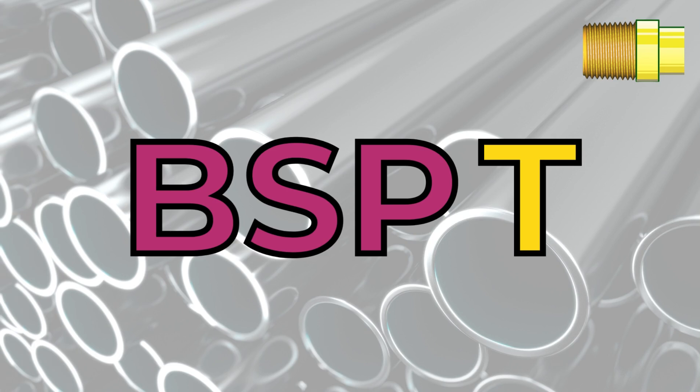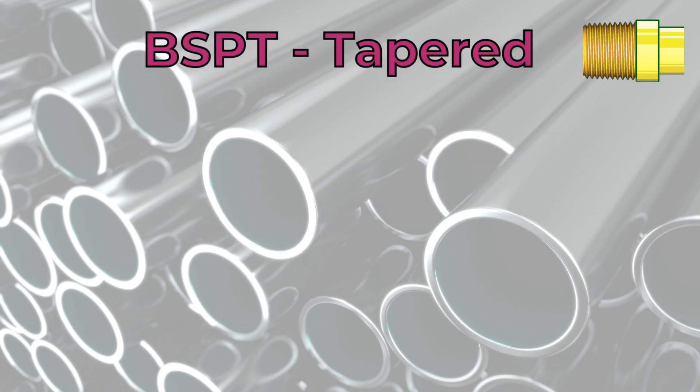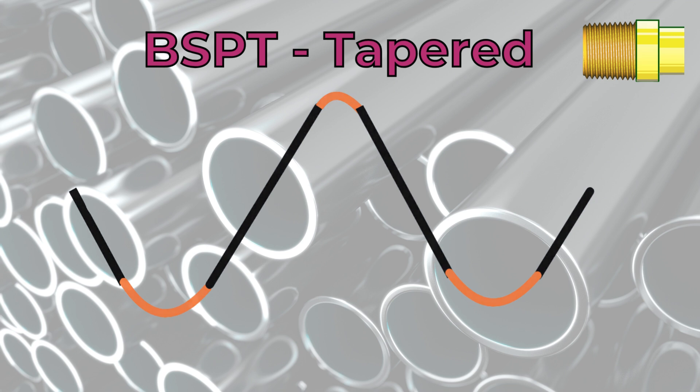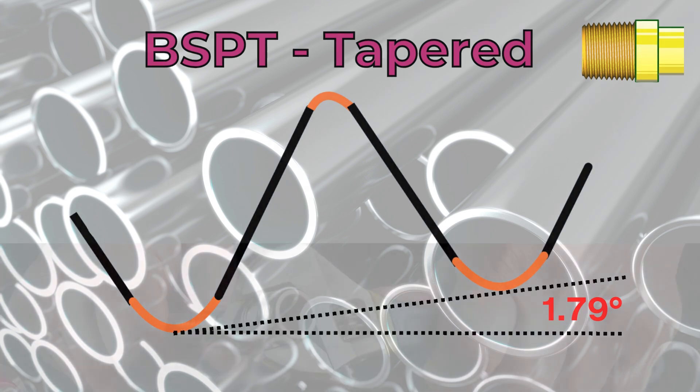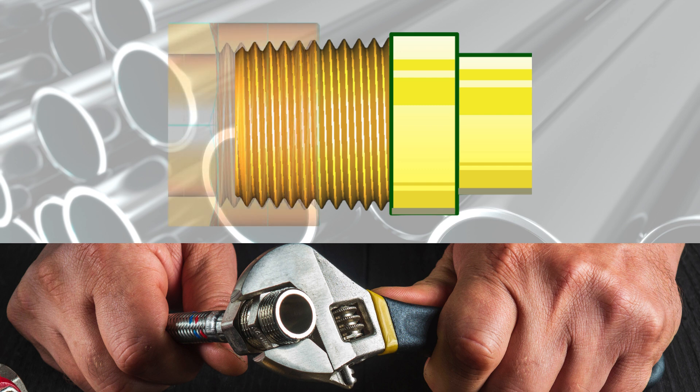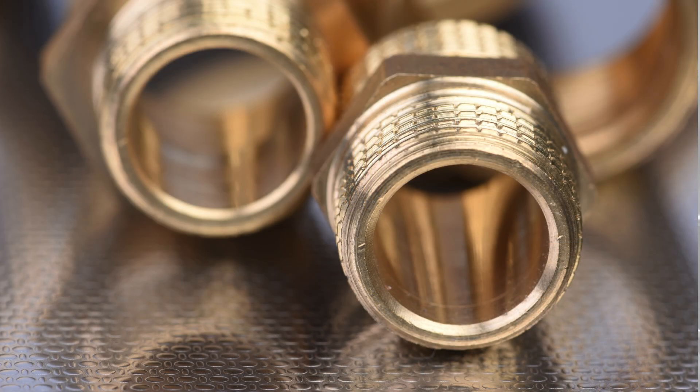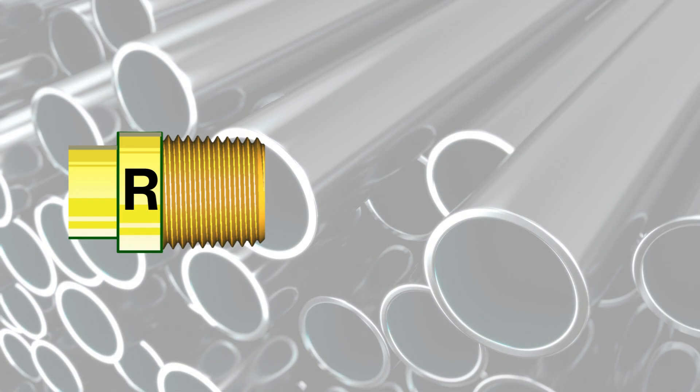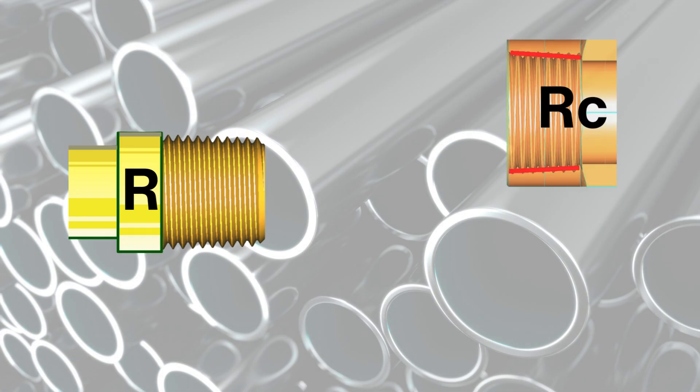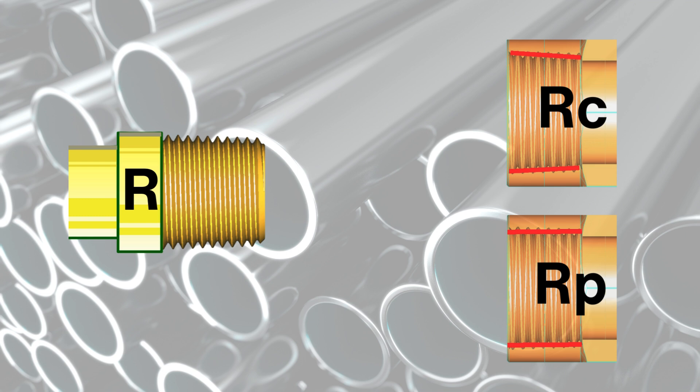We will deal first with BSPT. As you remember, the letter T stands for tapered and the profile is tilted by an angle of 1.79 degrees relative to the thread axis. It creates a seal when the threads are torqued as the flanks of the external and internal threads compress against each other, and the use of an O-ring is optional. A BSPT thread can belong to one of three series: R external tapered, RC internal tapered, or RP internal parallel. The external R thread can be assembled on either RC or RP internal threads.